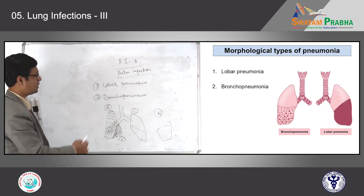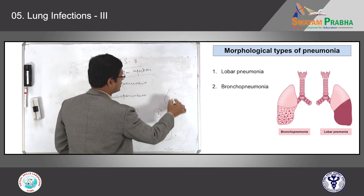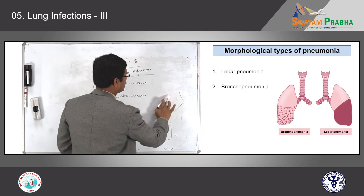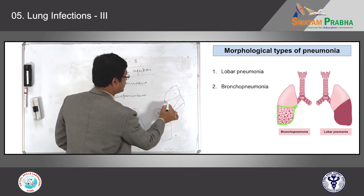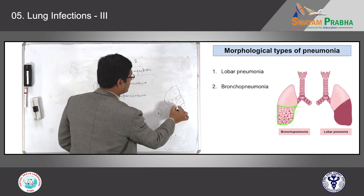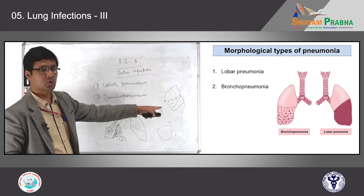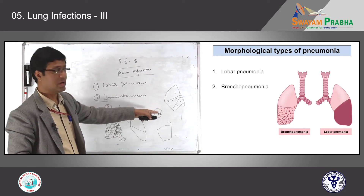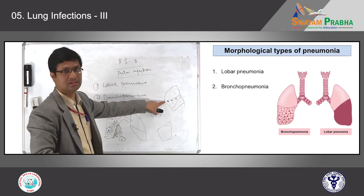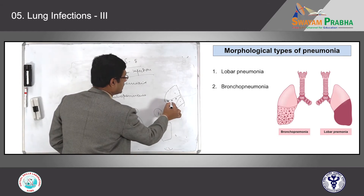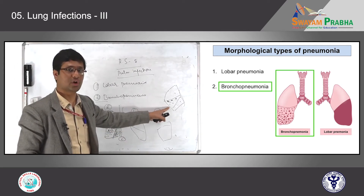In comparison to lobar pneumonia, we have a second category called bronchopneumonia. What are the typical classical features of bronchopneumonia? It will be multiple patchy involvement of the lung parenchyma, and usually it is not limited to one lobe. You can see in the picture that two lobes are involved on the right side — both lower and middle lobe — showing pinkish dots, which are the involved pneumonic patches. When you see this kind of morphology, we call it bronchopneumonia.